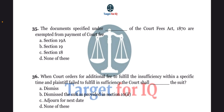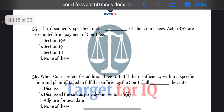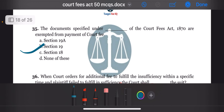Next question: the documents as specified under dash of the Court Fees Act 1870 are exempted from payment of court fee. The options are A. Section 19A, B. Section 19, C. Section 18, or D. None of these. The correct answer is option B. Section 19.